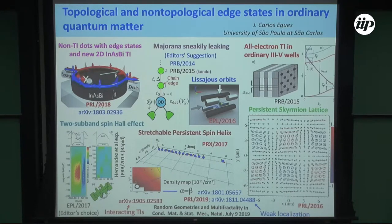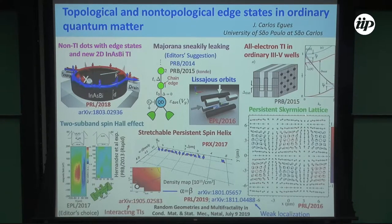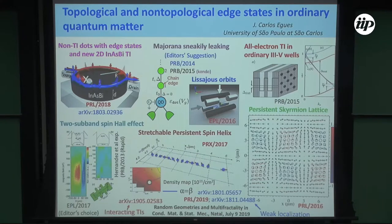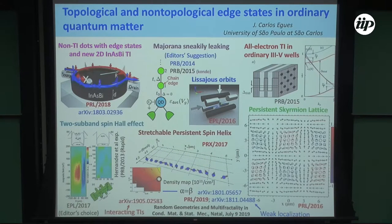There's still controversy whether the zero-bias peak is the Majorana fermion or not. We believe that if you change the geometry — the experiments have been done measuring current along the wire — we're proposing a transversal geometry. There are also proposals related to 3-5 materials. As you can see from the title of this talk, I'm focusing on topological phenomena in ordinary materials like 3-5 materials, and also a skyrmion lattice in a 2D system.